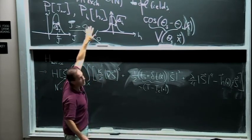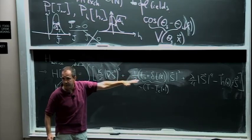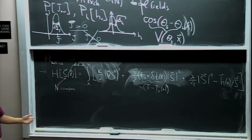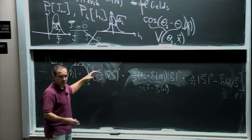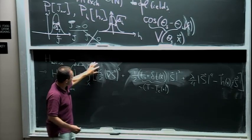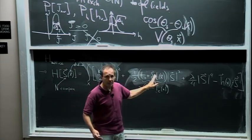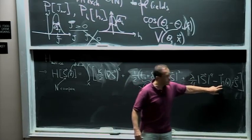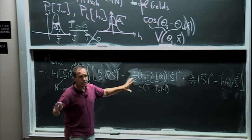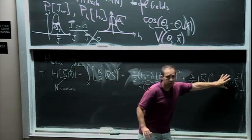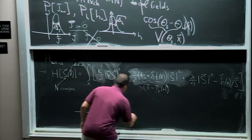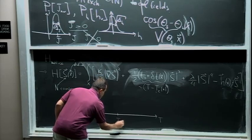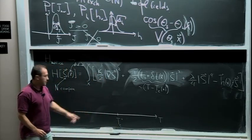The problem reduces to understanding how the Hamiltonian evolves under the coarse graining of short-scale degrees of freedom. If you can understand how the Hamiltonian evolves in this funny space of coarse graining, then you can deduce where you're going in terms of phases and phase transitions — you can really understand the phases and critical phenomena. So let me now say a few things about this. Why don't we take a break? Good idea. I'll continue in five minutes.